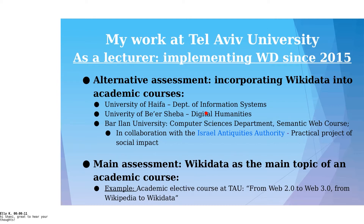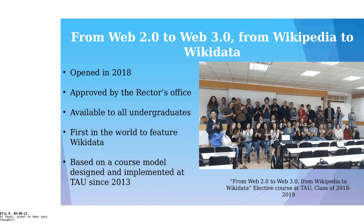I'm going to use my course as an example. This course is called "From Web 2 to Web 3, From Wikipedia to Wikidata." It opened in 2018 and was approved by the rector's office at the university, which is unusual. It is available to all undergraduates at Tel Aviv University, so it hosts people from basically all disciplines — very diverse. We can have people studying mechanical engineering or computer science alongside people from the arts and humanities.